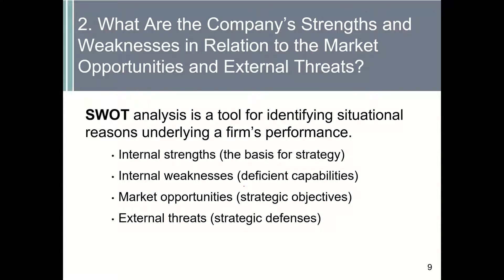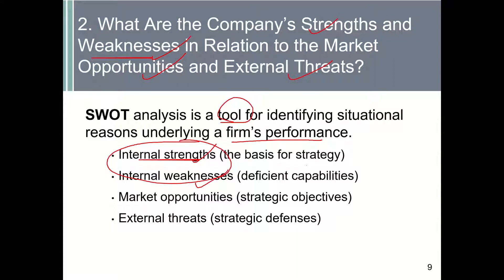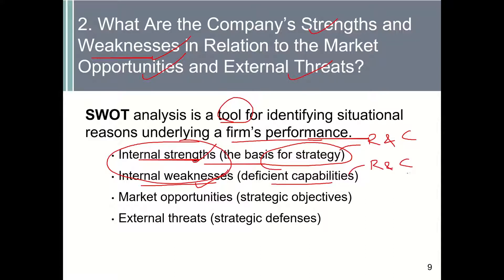Our second learning objective is to apply the SWOT framework to assess a company's strengths, weaknesses, opportunities, and threats. SWOT analysis is a tool for identifying situational reasons underlying a firm's performance — it explains why a company is achieving its performance today. SWOT analysis examines two internal components: a firm's strengths and weaknesses. A firm's strengths should be used as a basis for developing strategy, and they come from its resources and capabilities. A firm's weakness refers to resources and capabilities that it does not possess or performs poorly.